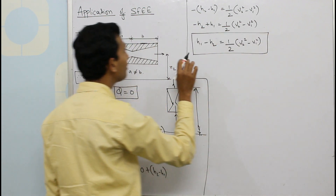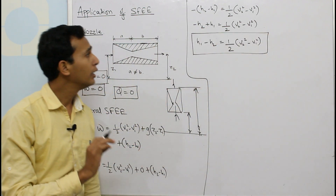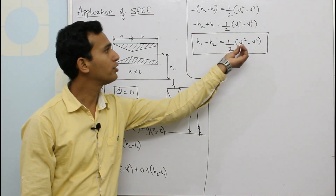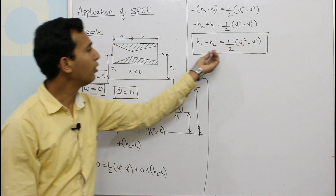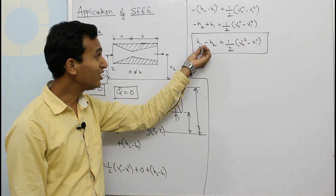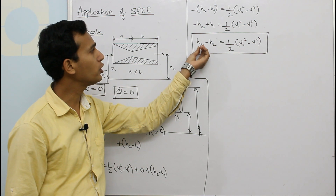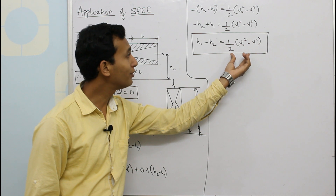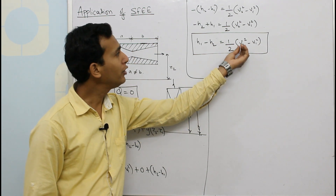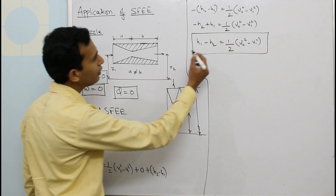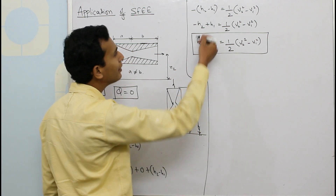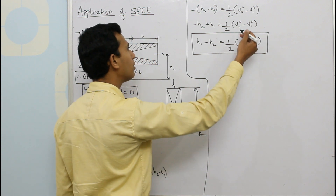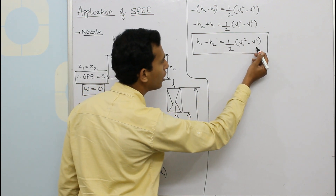This equation indicates that the change in enthalpy equals the change in kinetic energy. If H1 is greater than H2, then in order for the right-hand side to be positive, V2 squared must be greater than V1 squared. This means whatever enthalpy was greater at the inlet than the outlet, the velocity at the outlet should be greater compared to the velocity at the inlet.